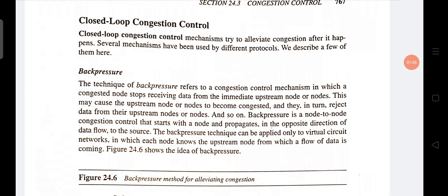In open loop congestion control, the congestion which is going to occur at a node is handled by taking preventive methods or techniques to avoid congestion from happening. So in open loop congestion control we control congestion before it happens, but in closed loop congestion control we control congestion after it has already happened.